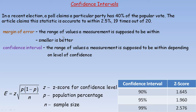A margin of error is a range of values a measurement is supposed to be within, and of course the smaller the better. You don't want to be off by too much. A confidence interval is the range of values a measurement is supposed to be within depending upon the level of confidence. There are different confidence intervals that are often chosen: 90%, 95%, 99%, and these are the z-scores for the standard normal table that are associated with these.